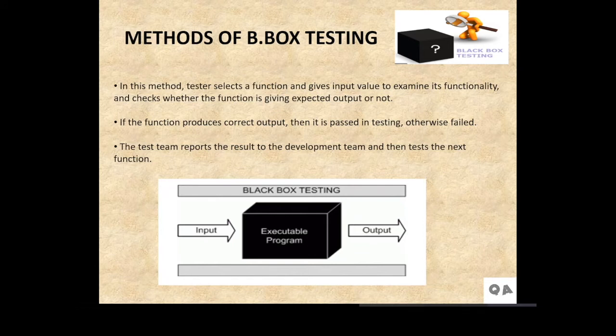Now comes methods of black box testing. There are different methods in which we can do black box testing. It can be either functional testing or non-functional testing, depending on the functions. In this method, the tester selects a function and gives input value to examine its functionality and checks whether the function is giving expected output or not. If the function produces correct output, then it passes testing, otherwise it fails. The test team reports the result to the development team and then tests the next function. Like in the picture, we can see input is there, output is there, and then the executable program.